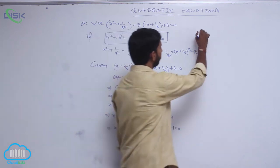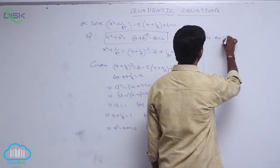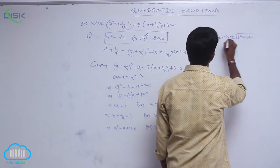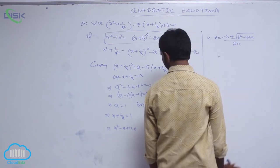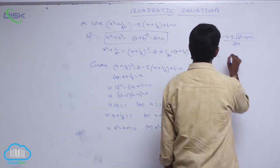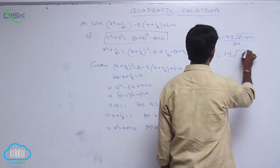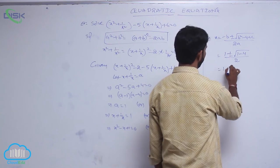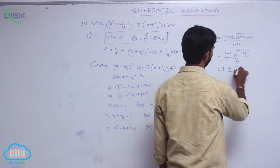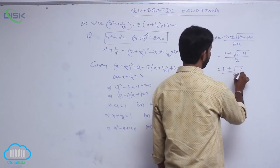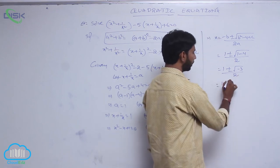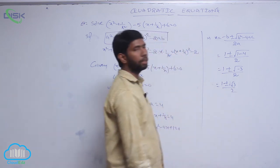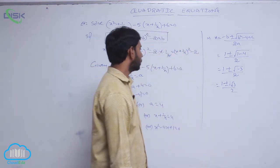Using the quadratic formula x equals minus b plus or minus square root of b squared minus 4ac by 2a. For the first equation, b equals minus 1, so x equals 1 plus or minus square root of 1 minus 4 by 2, which gives 1 plus or minus i root 3 by 2.